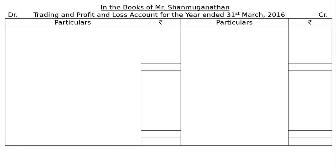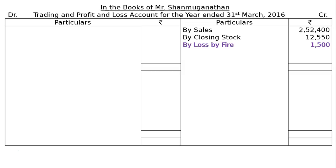The Trading Account has debit and credit sides. On the credit side: By Sales Rs. 2,52,400; By Closing Stock Rs. 12,550; By Loss by Fire Rs. 1,500. Loss by fire and closing stock are both adjustments. Closing stock will be shown on the credit side of the Trading Account and also on the asset side under current assets at Rs. 12,550.